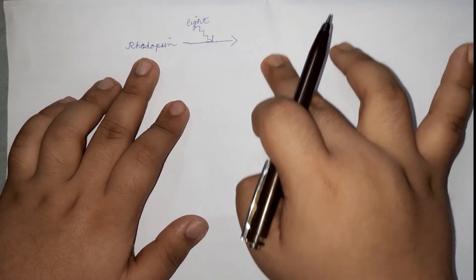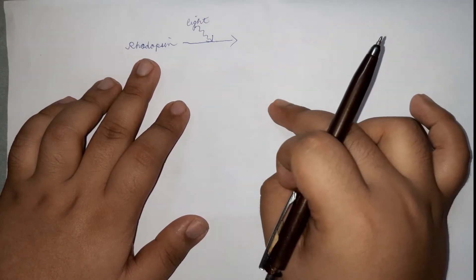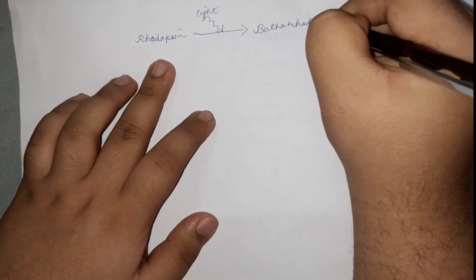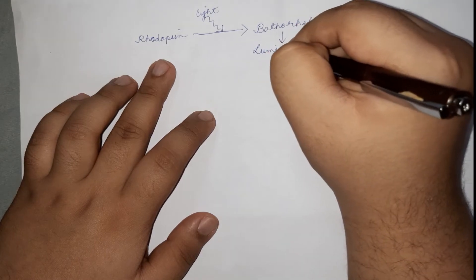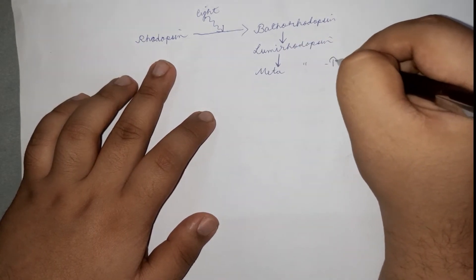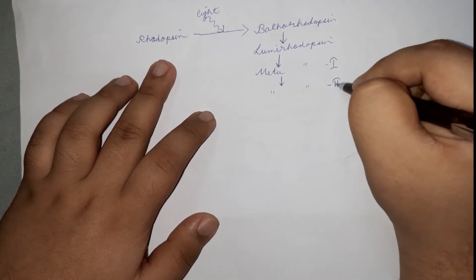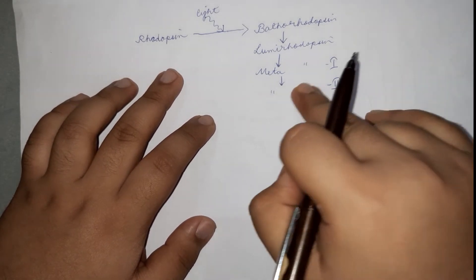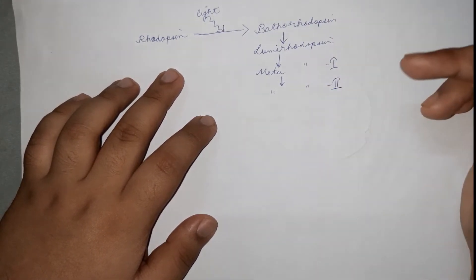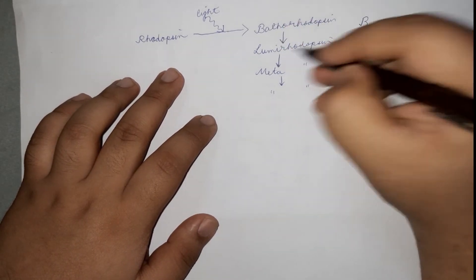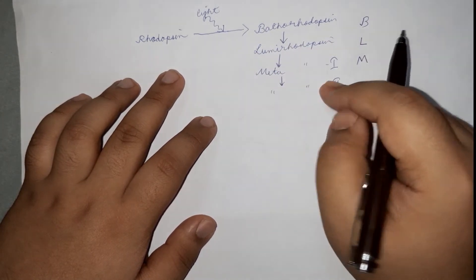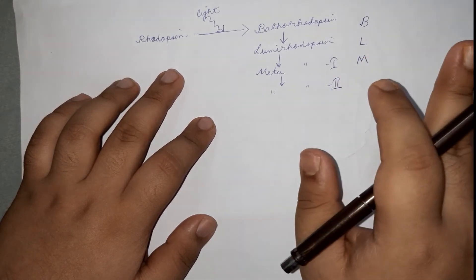Before breaking down into its constituents, a series of intermediates are formed within picoseconds. These intermediates are: bathorhodopsin, then lumirhodopsin, then metarhodopsin 1, then metarhodopsin 2 — and there is also metarhodopsin 3. To remember them, use the acronym BLM: Bathorhodopsin, Lumirhodopsin, Metarhodopsin 1 and 2.